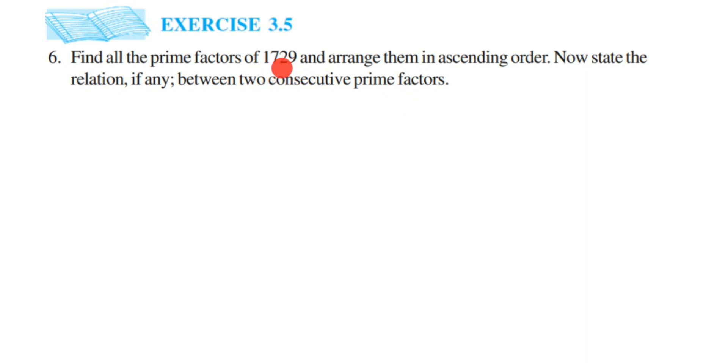Now 1729 is also called Ramanujan's number. So let's find out the prime factors of 1729. We have different methods like we can go for division, like prime factorization method, or you can just do the listing method.